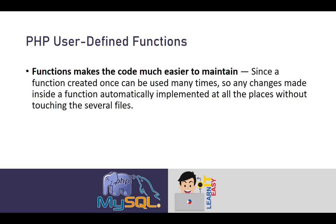Second, functions make the code much easier to maintain. Since a function created once can be used many times, any changes made inside a function are automatically implemented at all the places without touching several files. If you just copy-paste code instead, you'd have to update every location where it was pasted. With a function, one update is enough — all dependent code is automatically updated.